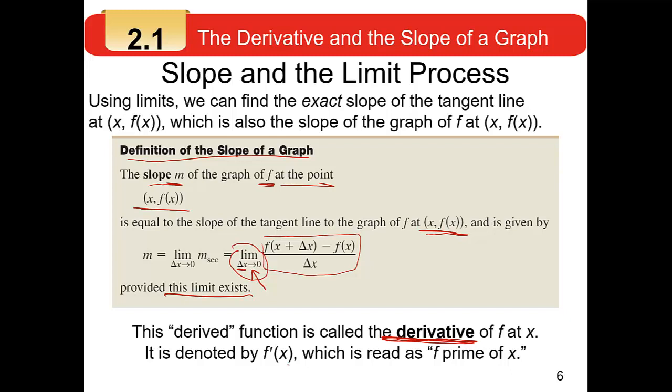We use various symbols for the derivative. We'll stick with the function name — in this case f — with a little accent symbol as a superscript. That's read 'f prime of x,' and it's called the derivative of f at x. If the function were g, the derivative would be g prime of x; if the function were h, it would be h prime of x. We're learning both basic ideas and vocabulary — and you have to know the vocabulary, because if a problem asks you to do something, you need to know what it's asking.